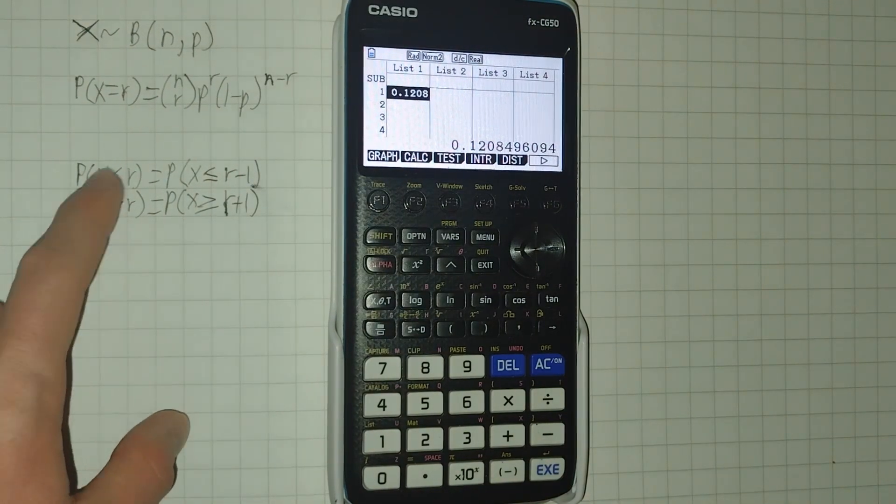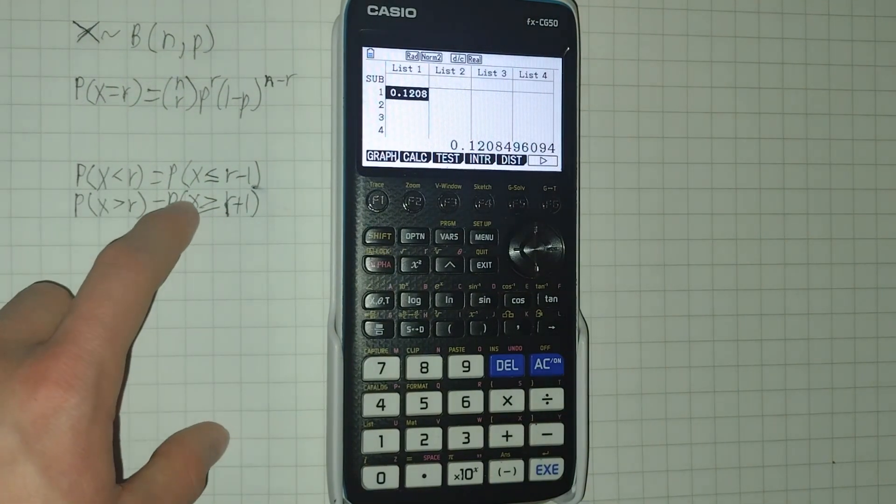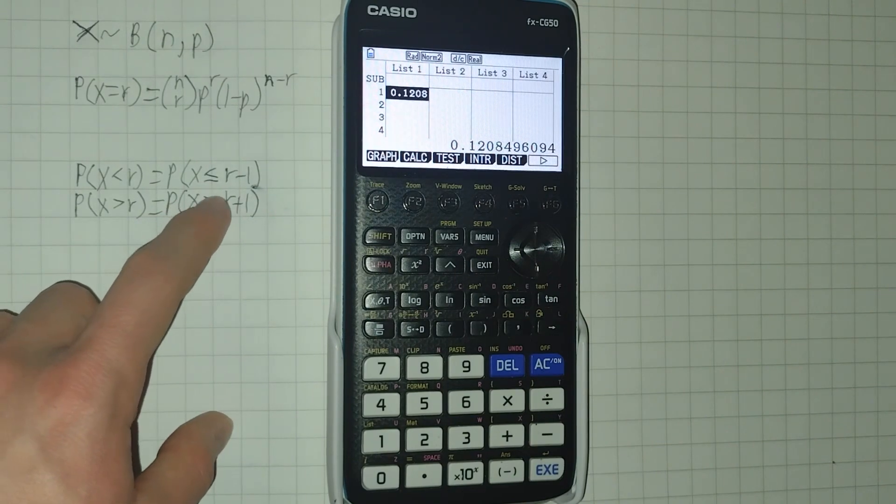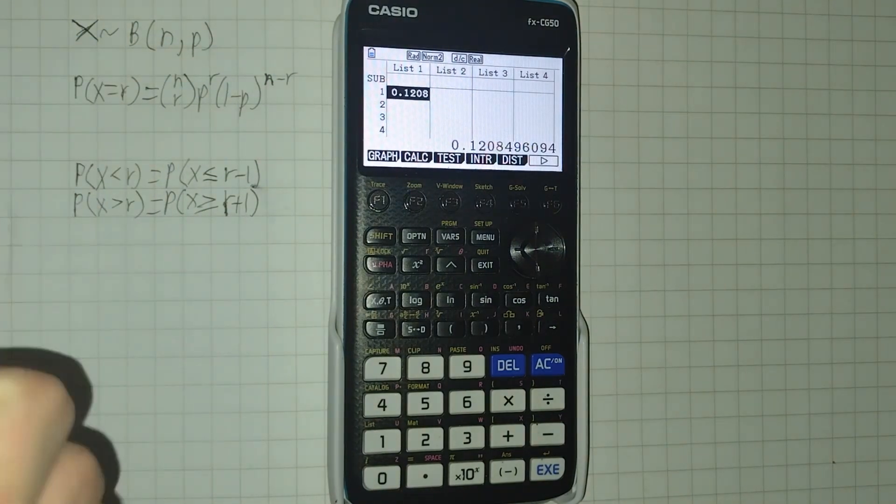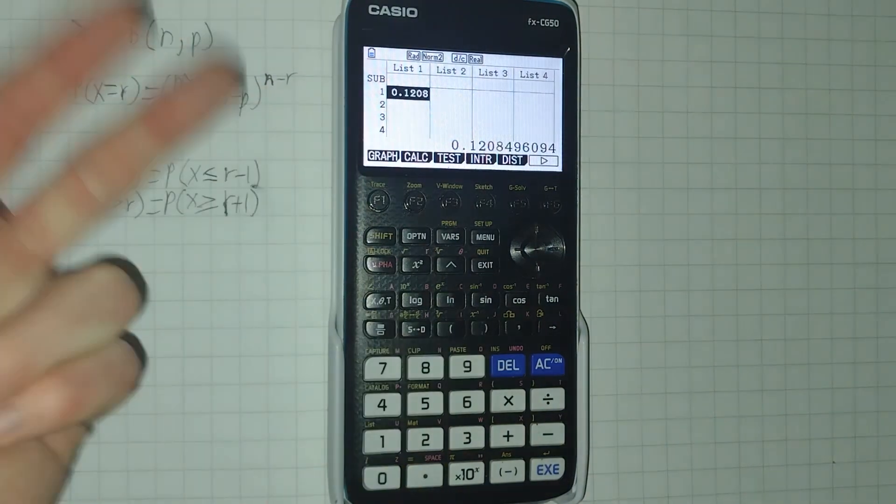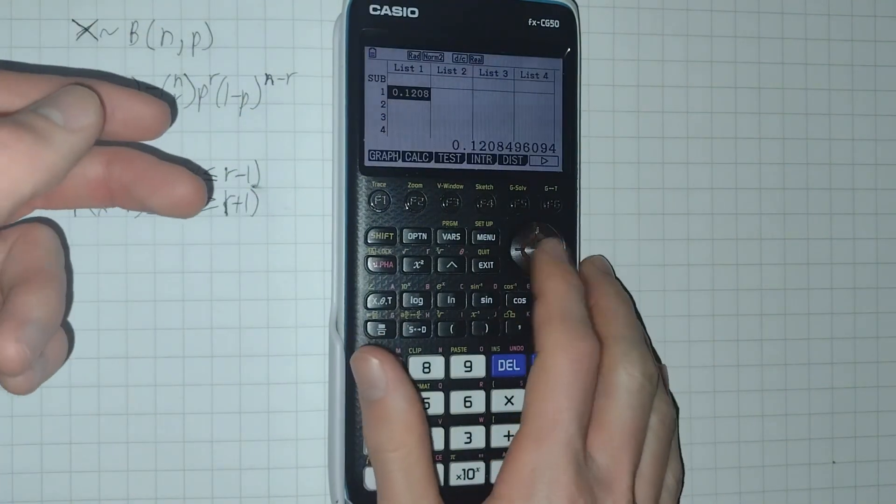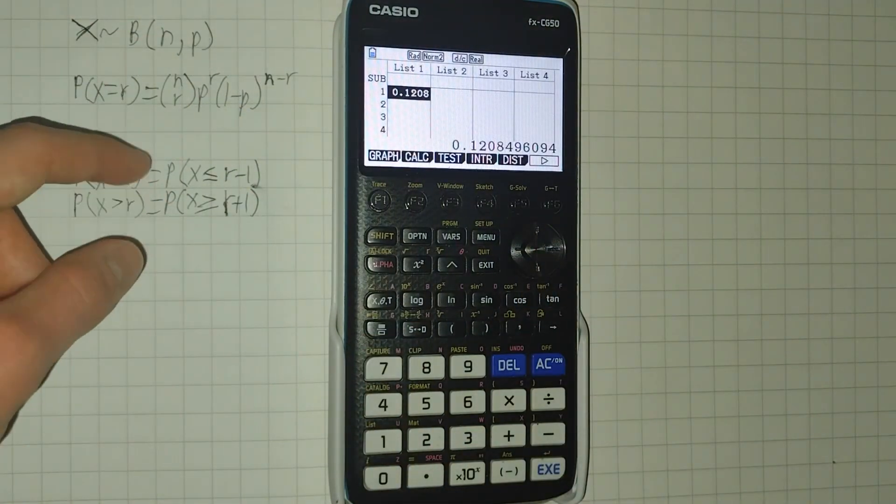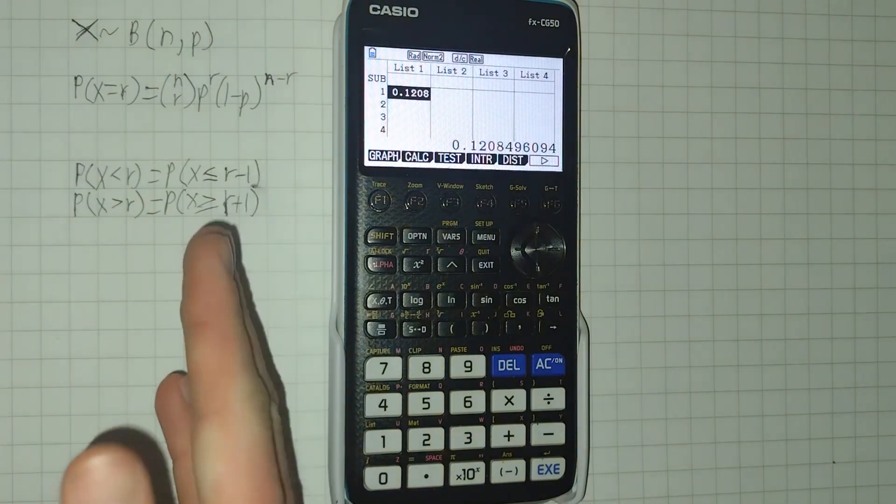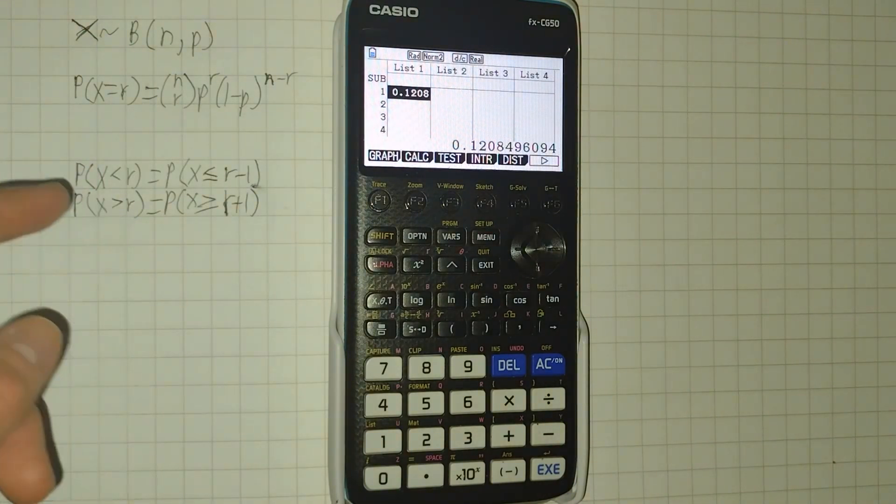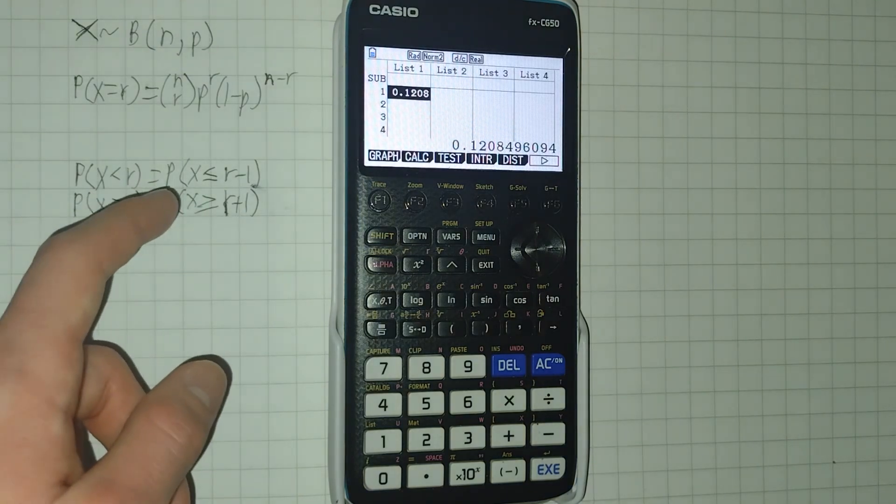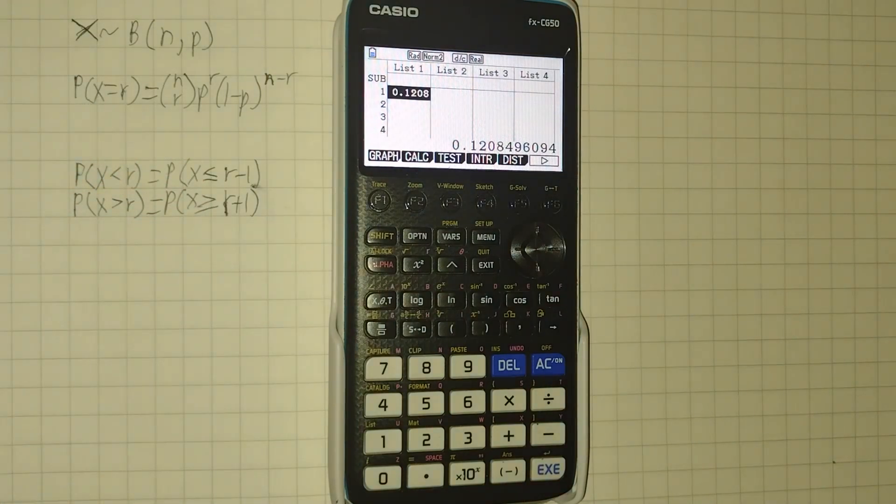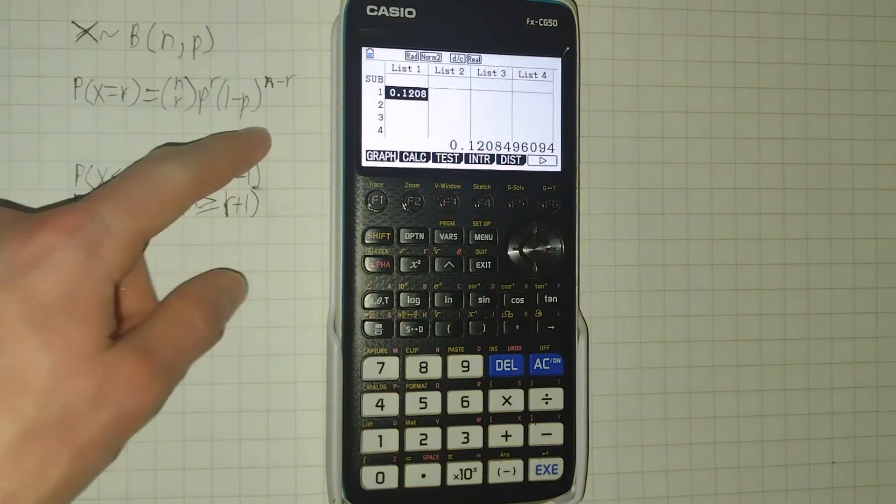Similarly, P of X is greater than r is the same as P of X is greater than or equal to r plus 1, and this is the probability of this random event occurring r plus 1 times, plus r plus 2 times, plus r plus 3 times, and so on, all the way up to n times. And you can also calculate any specific range. So you can have P of r is less than or equal to X which is less than or equal to r plus 5, or something like that. You sometimes need to calculate those, and they can be very long to calculate manually.